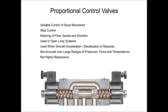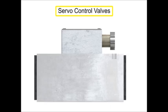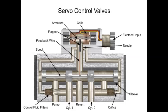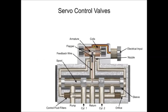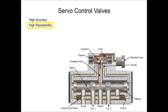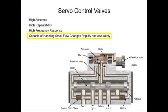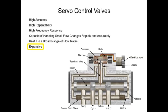The third type of hydraulic directional control technology is called the servo valve. First developed in the 1940s, servo valves operate with very high accuracy, repeatability, and high frequency response. Servo valves are highly responsive and capable of handling minuscule flow changes both rapidly and accurately over a broad range of flow rates, but at an extra cost.